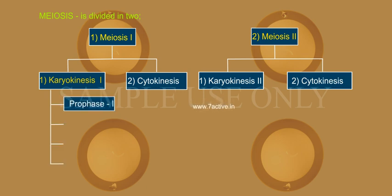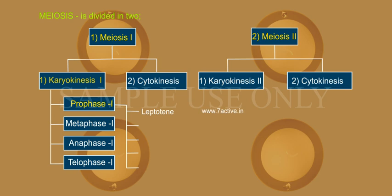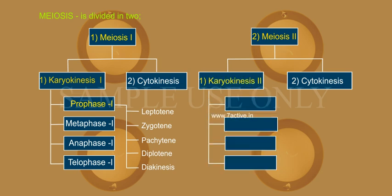Karyokinesis I occurs in four stages: prophase I, metaphase I, anaphase I, and telophase I. Prophase I itself has five sub-stages: leptotene, zygotene, pachytene, diplotene, and diakinesis. Karyokinesis II also has four stages: prophase II, metaphase II, anaphase II, and telophase II.